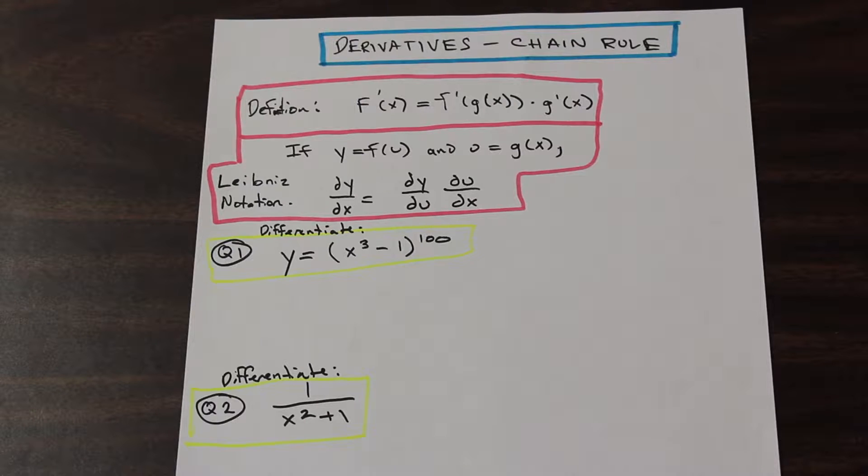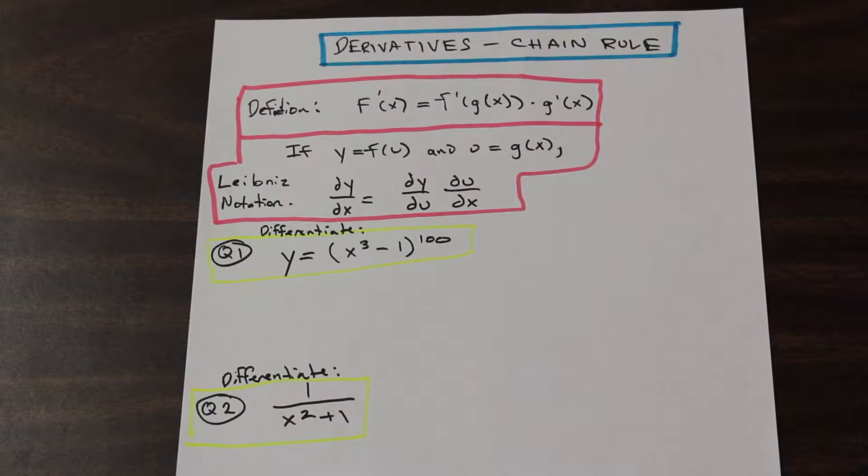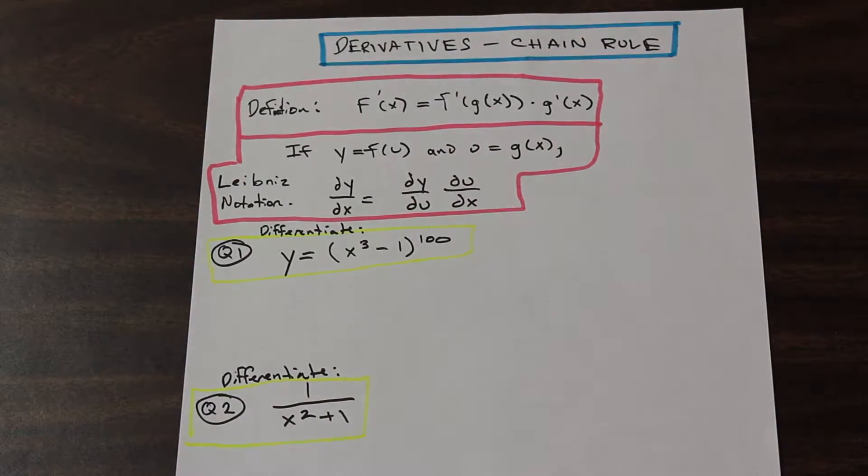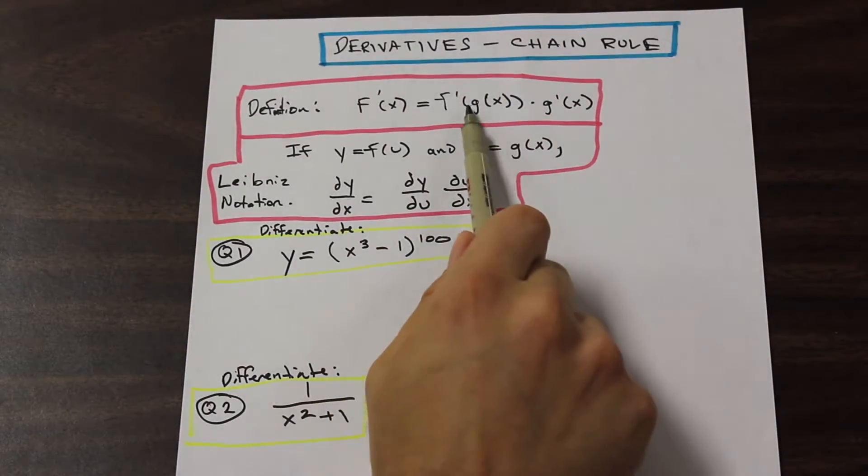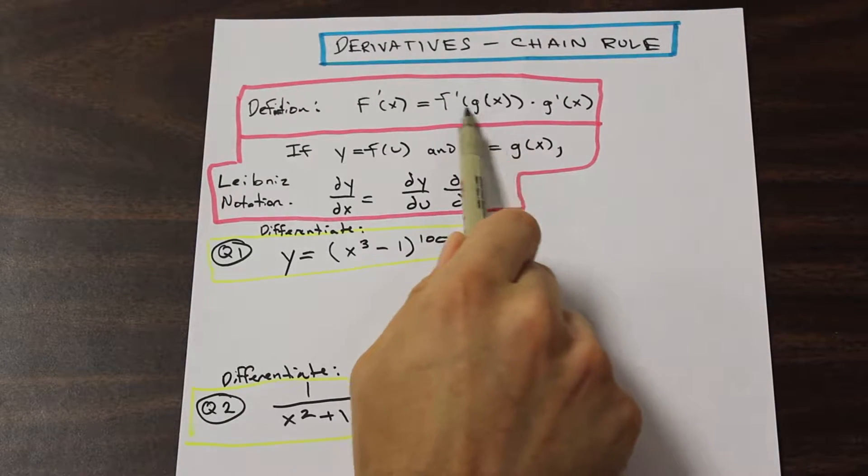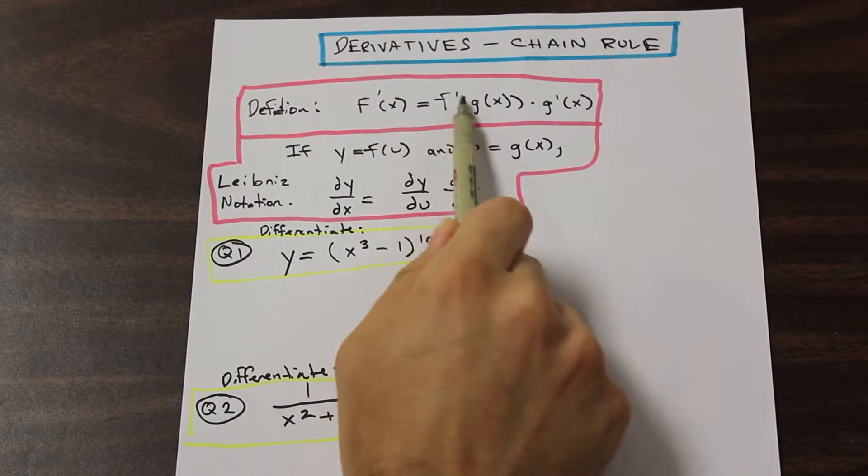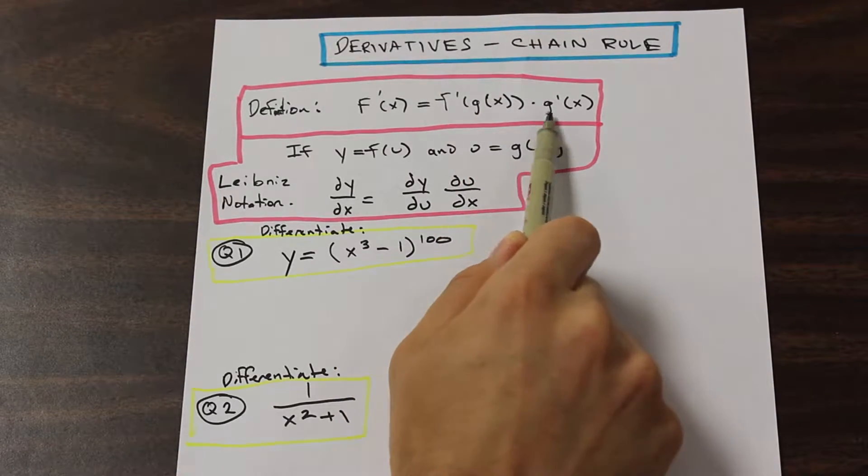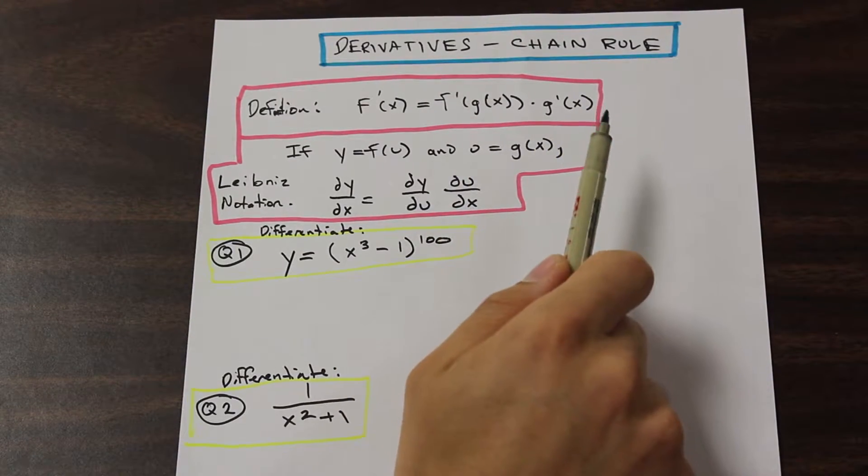So at the top in the pink box, I've written down the definition, as we always do. I have a big F, so capital F prime of X is equal to F prime of G of X times G prime of X. So as you can see, we have a composite function here. And what this means is that we have an inside function here, an inner function. So inside F of X, we have G of X. And then that is going to be times the derivative of G of X.